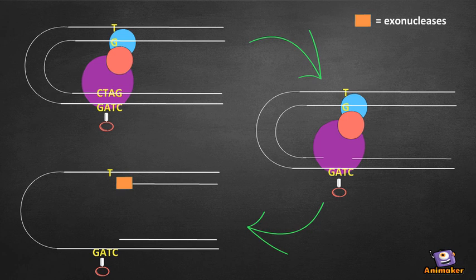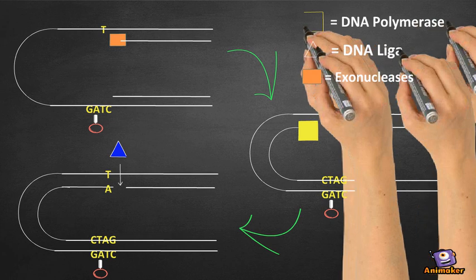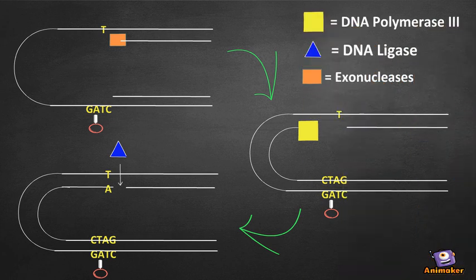Exonucleases Exo1 or Exo10 degrade the DNA past a mismatch with the help from a helicase. This allows DNA polymerase 3 to resynthesize the DNA strand and correct the error.